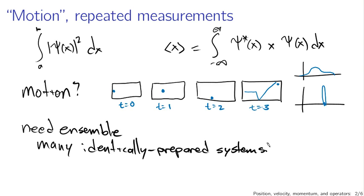If I wanted to know about the motion of the particle, I could do that again, except instead of taking my 100 measurements all at the same time, I would take them at slightly different times. So these would all be different systems that have been allowed to evolve for different amounts of time. The motion of the particle isn't going to look like a classical path — it's going to look like some sort of probabilistic motion of the wave function in space.